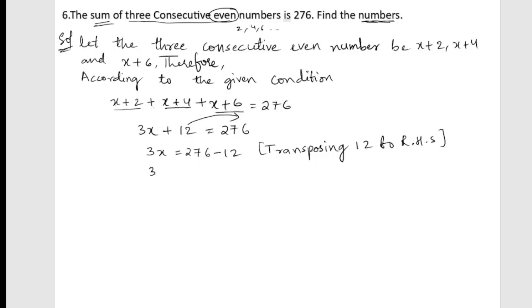So 276-12: 6-2=4, 7-1=6, giving us 264. Now let us remove this 3 by dividing: 3x÷3=264÷3. Three eights are 24, so we get x=88.